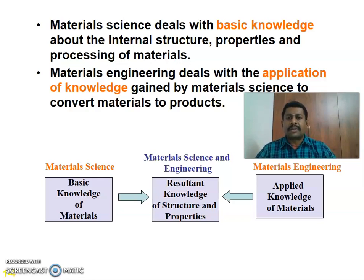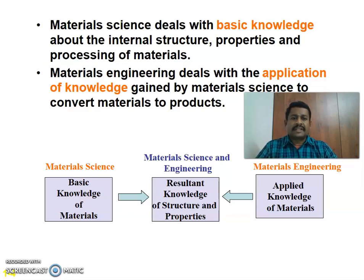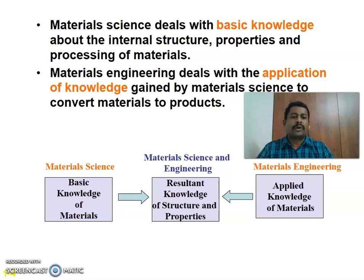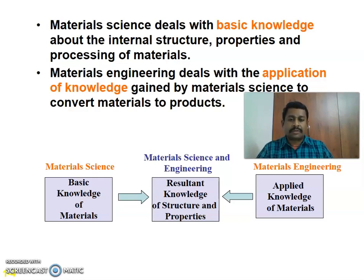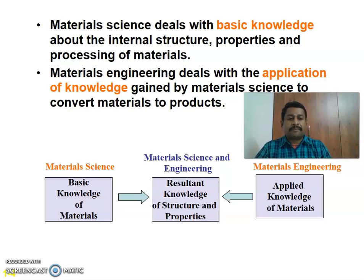This area of material science deals with basic knowledge about internal structure, properties, and processing of materials and its applications. Material science deals with the application of knowledge to convert materials into a product. Material science is the basic knowledge about materials, and material science and engineering is the combined resultant activity of materials, knowledge structure, and their properties.